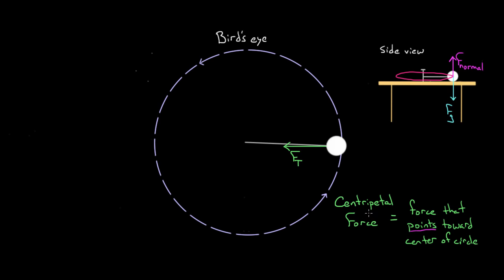Now be careful. Sometimes people want to say there's a force of tension and also a centripetal force. But that's just wrong, because the tension IS the centripetal force. I wouldn't draw it twice, any more than I'd say there's a normal force and also an upward force — the upward force is the normal force. Similarly, I'm not going to draw the centripetal force twice. The tension was the centripetal force.